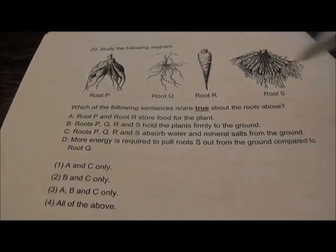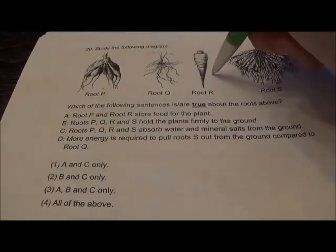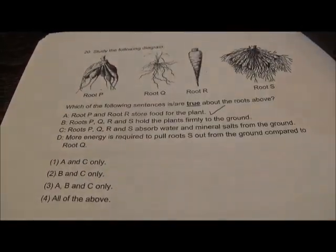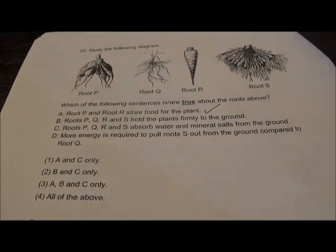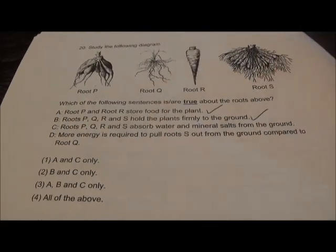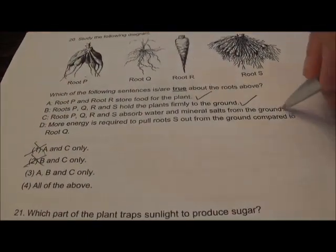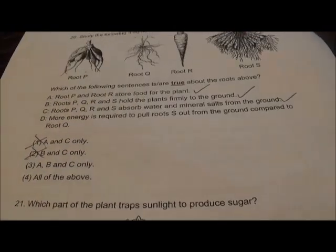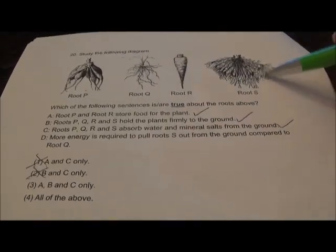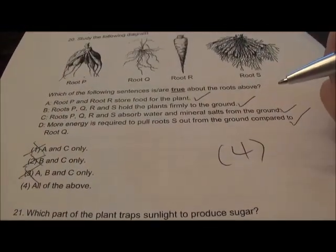Question 20: Study the 4 roots. P and R store food — true, like a carrot and sweet potato. P, Q, R, S hold the plant firmly to the ground — the main function of roots, besides absorbing water. So correct, you need A and B. P, Q, R, S absorb water — roots absorb water, so C is correct. More energy is required to pull out S compared to Q — S has thicker, more spread-out roots over a wider surface area, so definitely harder. All of the above. Question 20, answer is 4.